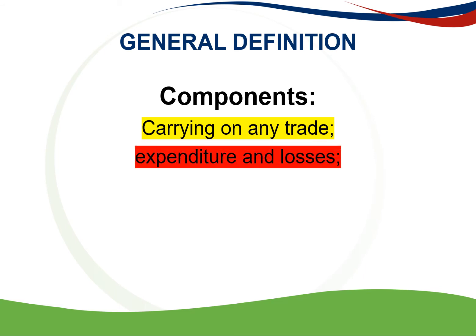The next component is your expenditure and losses. Deductible expenditure is not restricted to expenditure in cash, but also includes the outlay of amounts in a form other than cash. The next component is actually incurred. Expenditure that may be deducted includes both amounts paid and amounts for which the taxpayer has incurred a liability. In other words, a taxpayer may deduct expenses actually paid and amounts owing.